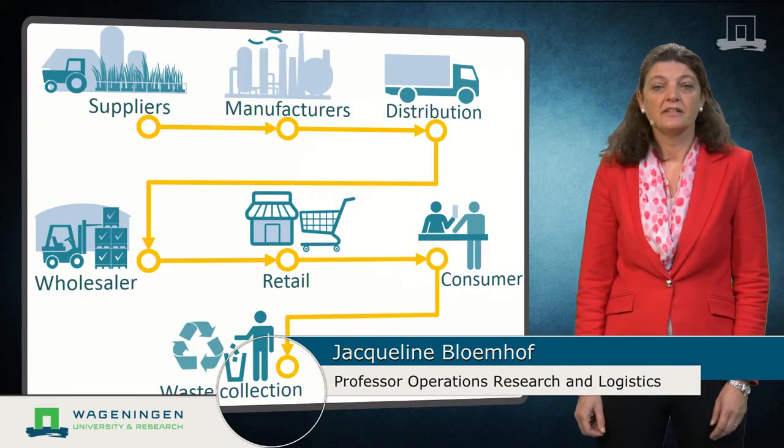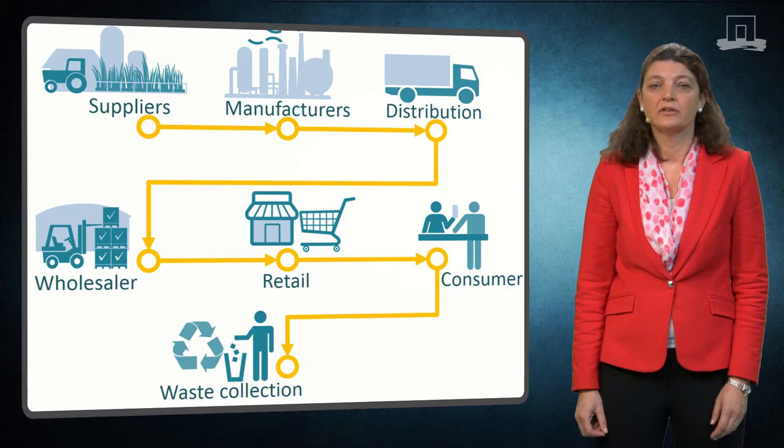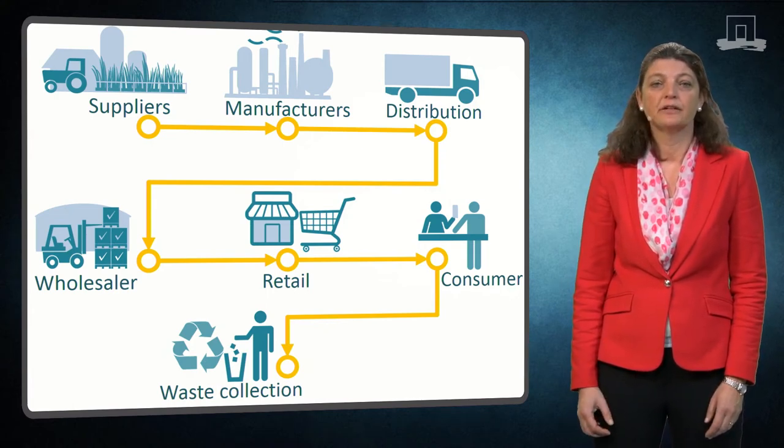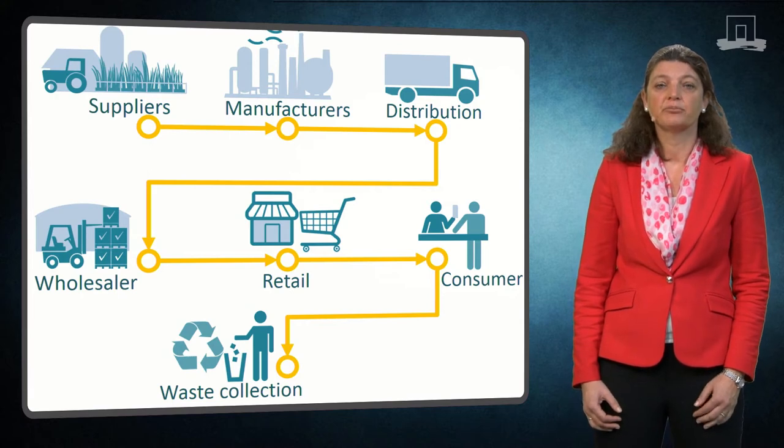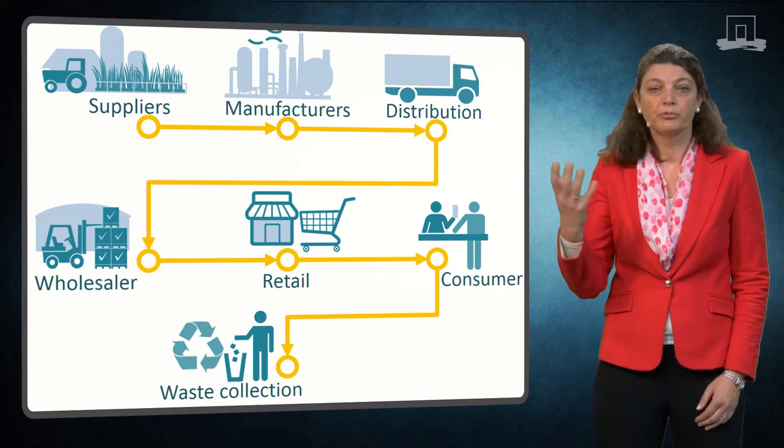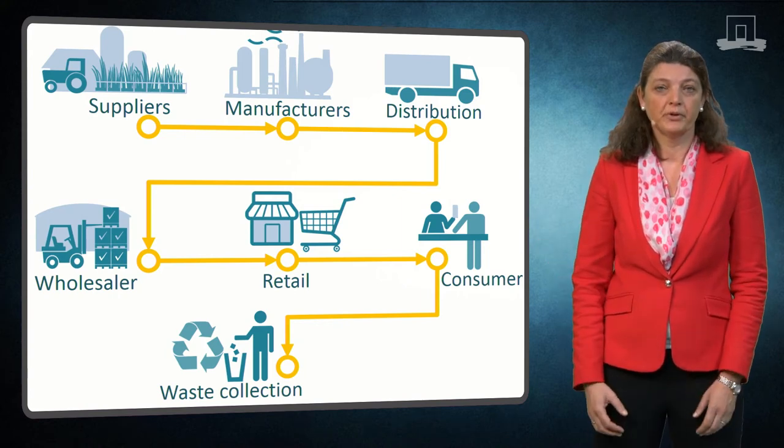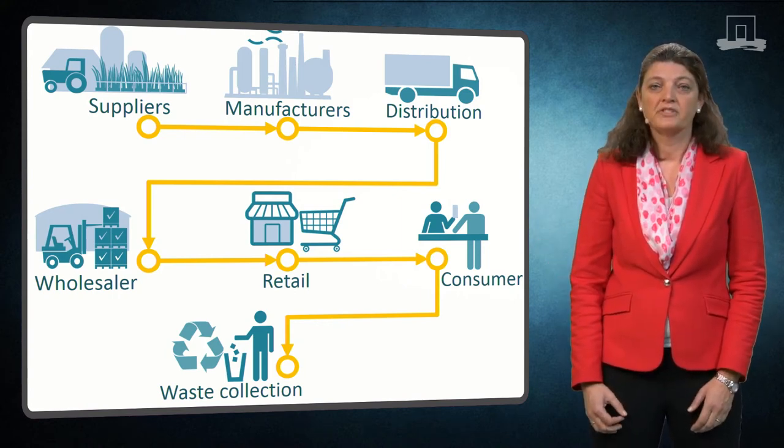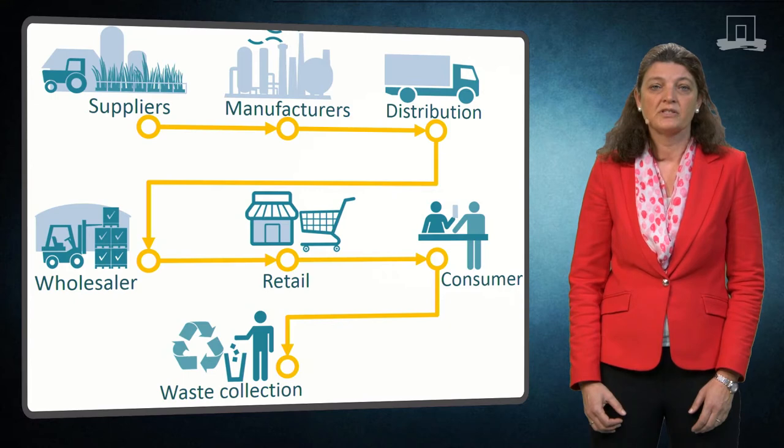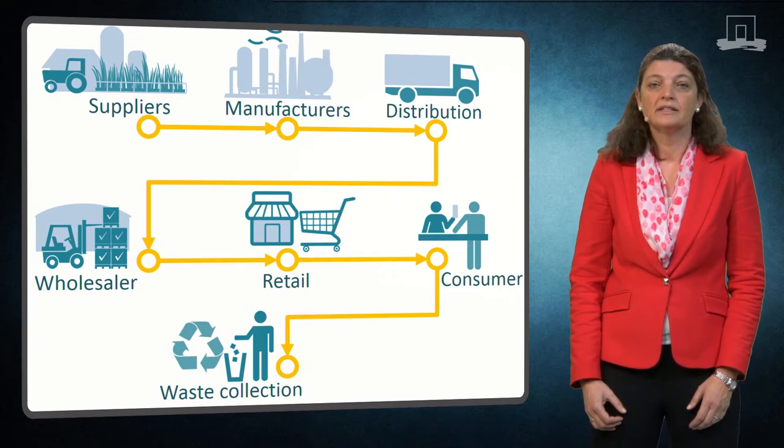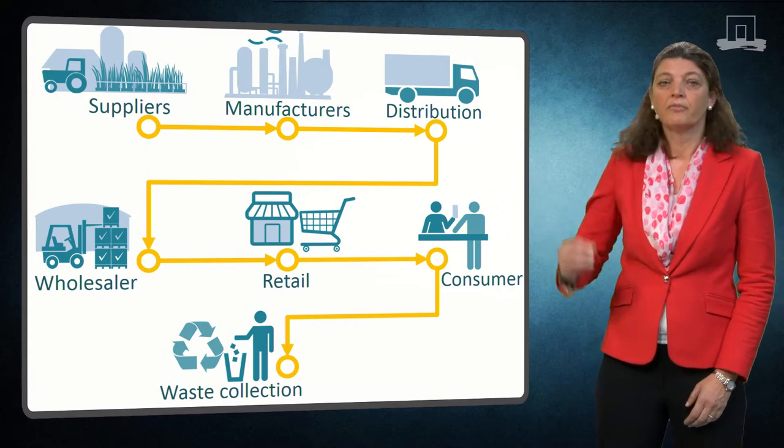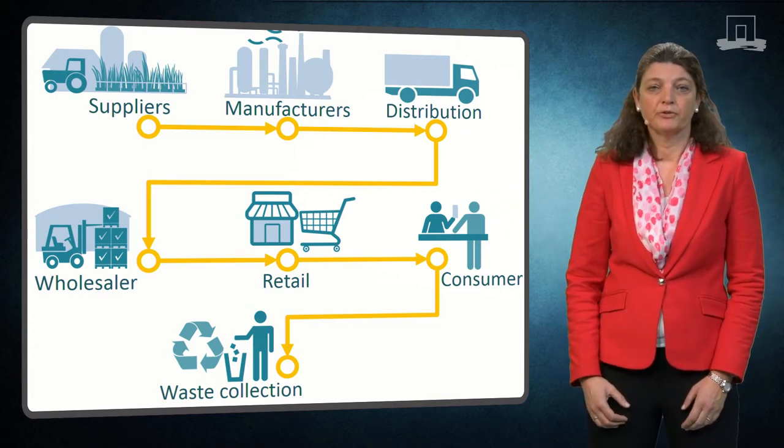The supply chain represents a network of organizations that are involved through upstream and downstream linkages in the different processes and activities that produce value in the form of products and services in the hands of the ultimate consumer. In the broad sense, a supply chain consists of two or more legally separated organizations linked by material, information and financial flows.